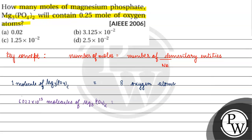how many oxygen atoms will there be? There will be 8 × 6.022 × 10²³ oxygen atoms.